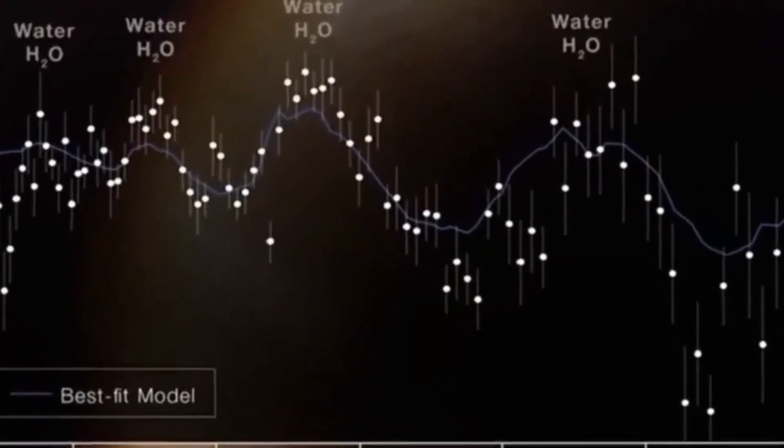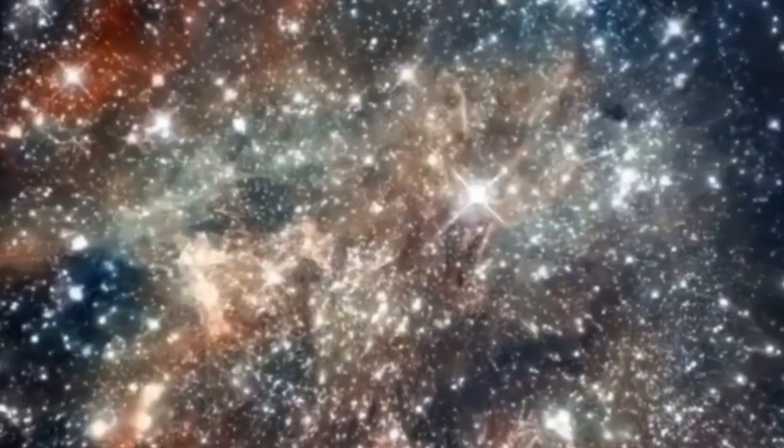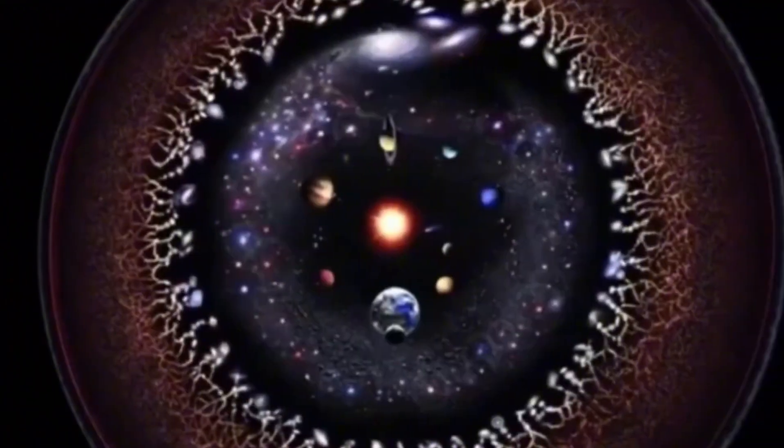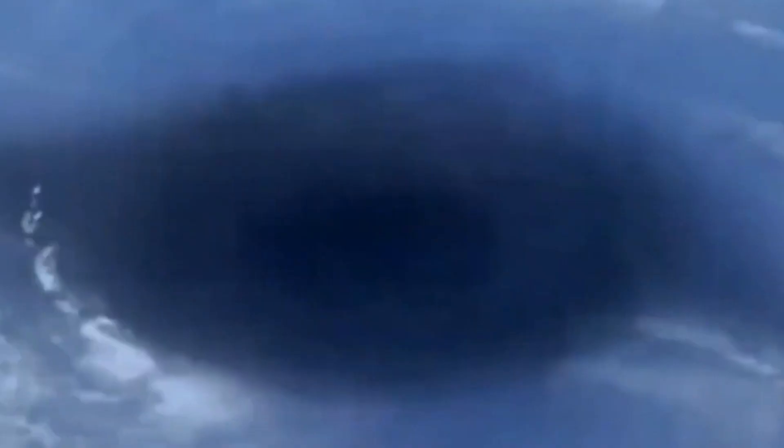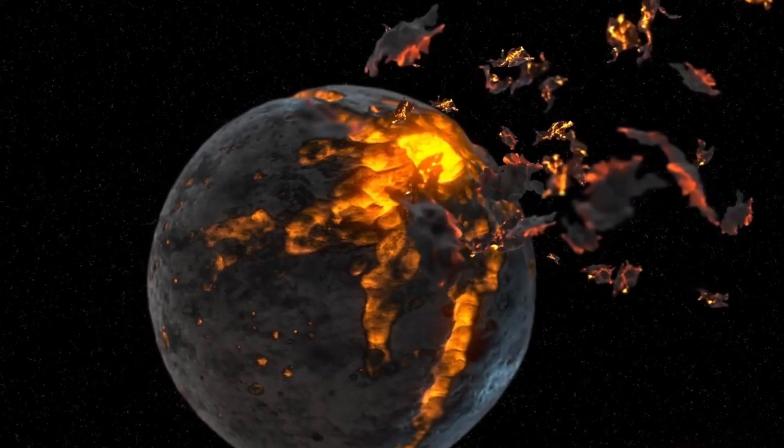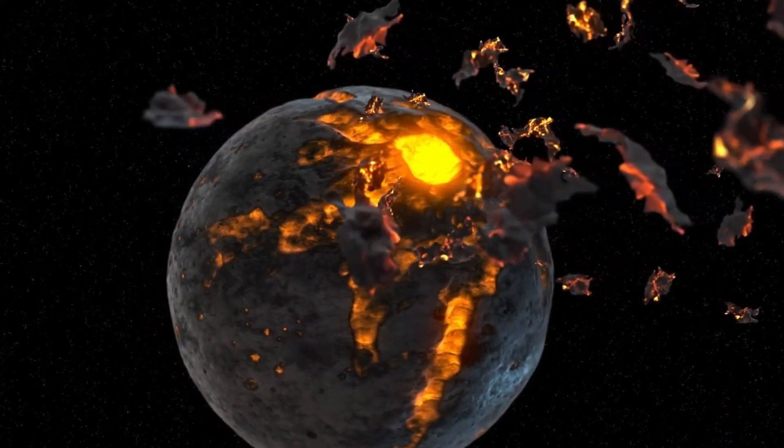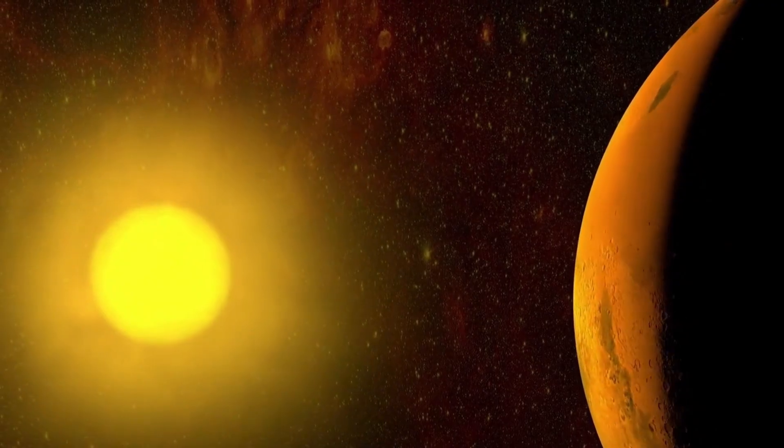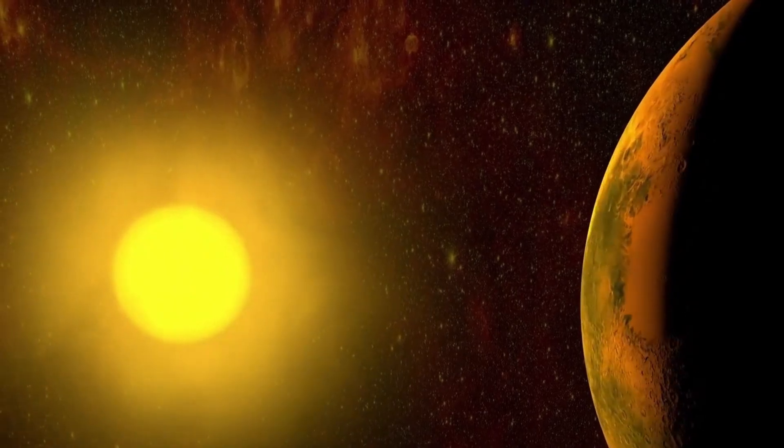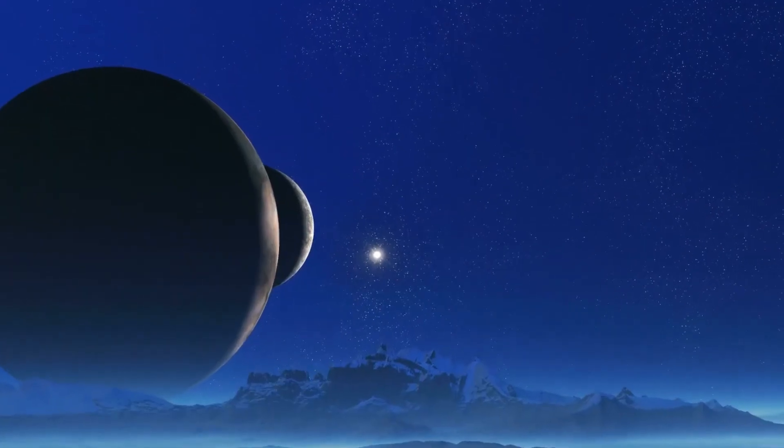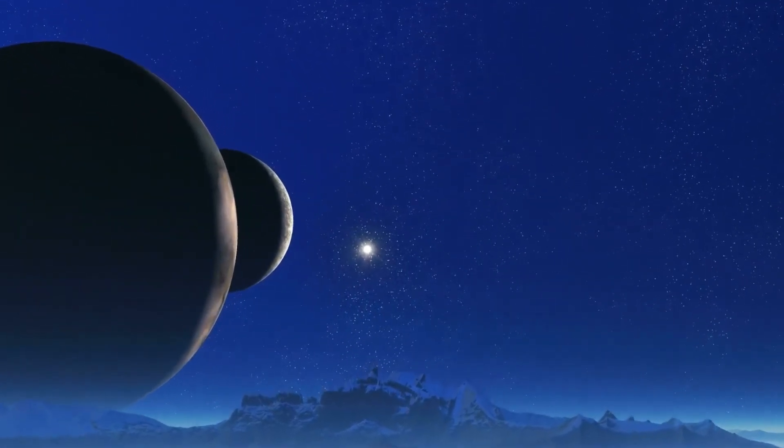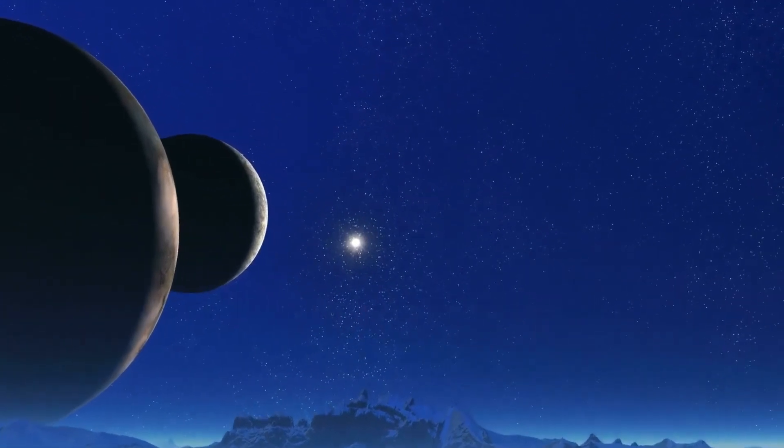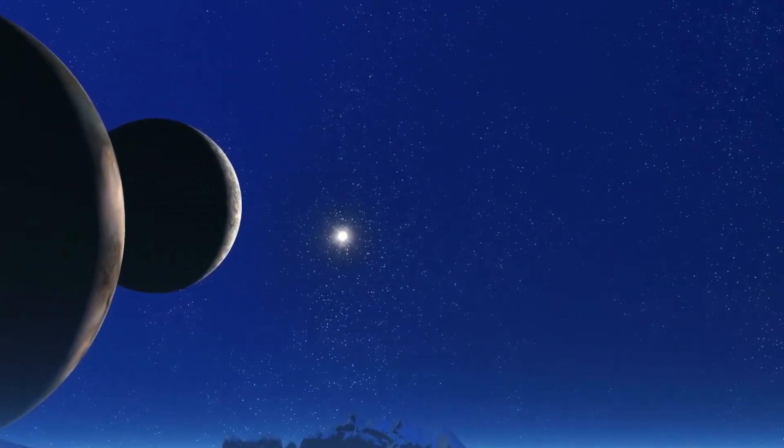She found an exoplanet, a celestial body located outside of our solar system, discovered in the Centauri B system. This exoplanet is an incredible 11 times more massive than Jupiter, the largest planet in our solar system. The Centauri B star system is classified as a Young Binary system, meaning that it consists of two stars orbiting around a common center of mass. This particular star system is located approximately 325 light-years away from Earth.